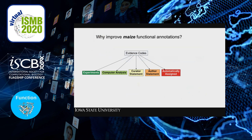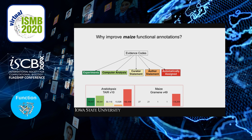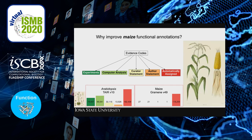We're interested in improving functional annotations in maize. At the time we started this work, existing GO annotations for the maize genome were almost entirely automatically assigned, whereas Arabidopsis — a small weed used as a research model in plant biology — had annotations distributed across the full spectrum of evidence codes. Since maize is critical for food, fuel, and other products, we decided we at least needed to make sure those automatically assigned annotations were pretty good.